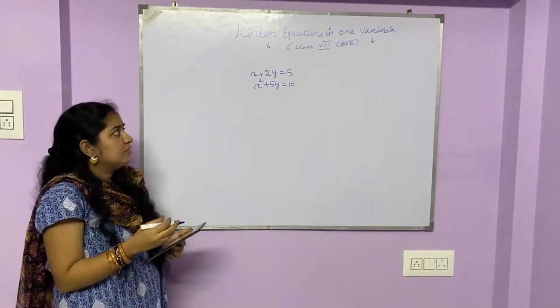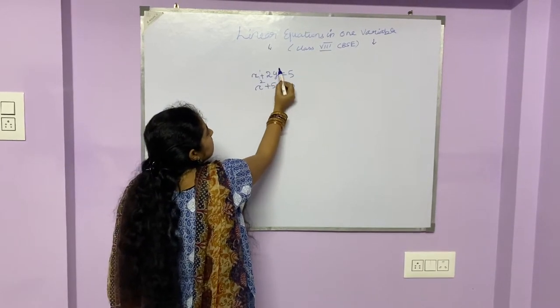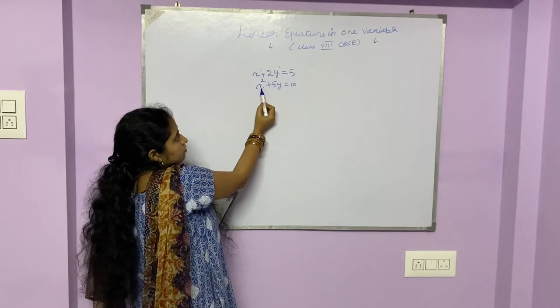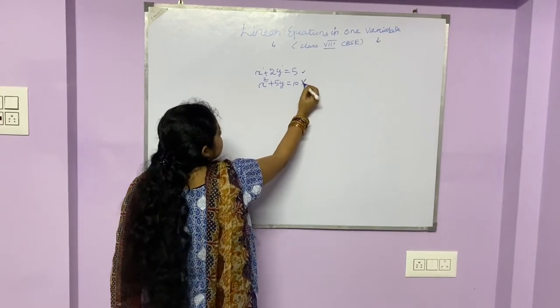Even though we have two variables in the given problem, we see that the power of both the variables is 1. In the second problem, the highest power of the variable is 2. Hence, we can say that the first one is a linear equation whereas the second one is not.